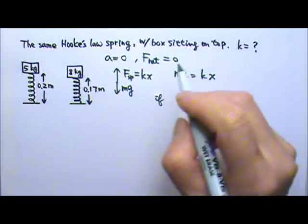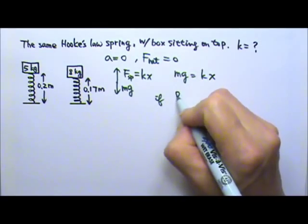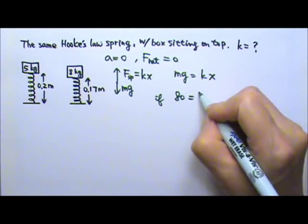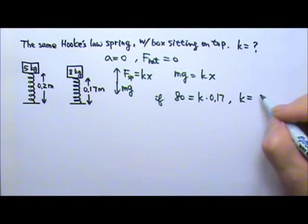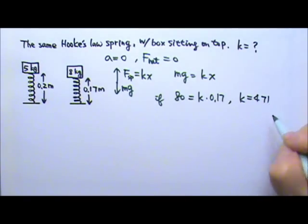If I use the 8kg box, the mg would be 80, and that would be k times 0.17, and this will give me a k that's 471.